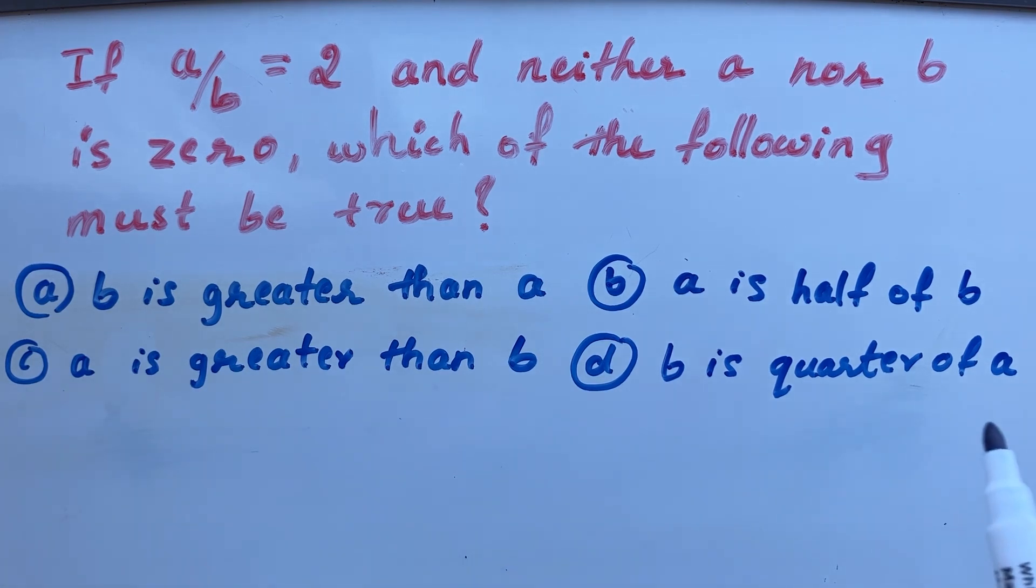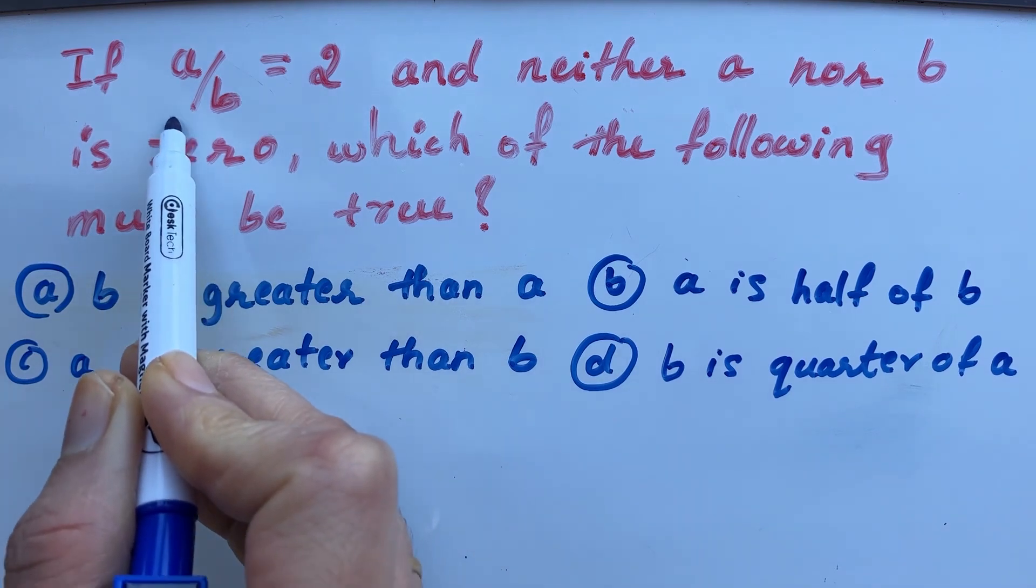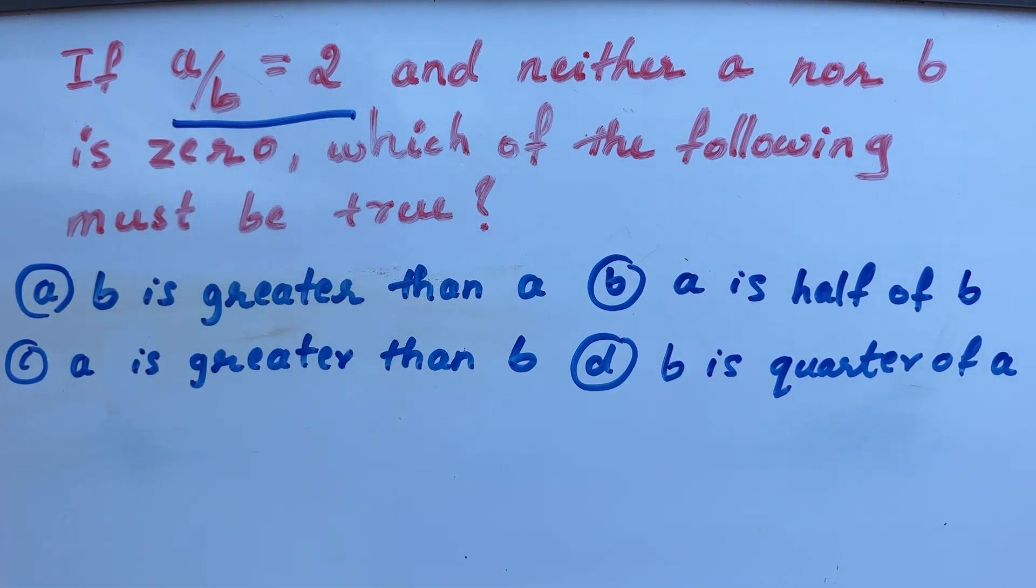Which of these four options must be true for A divided by B is equal to 2?